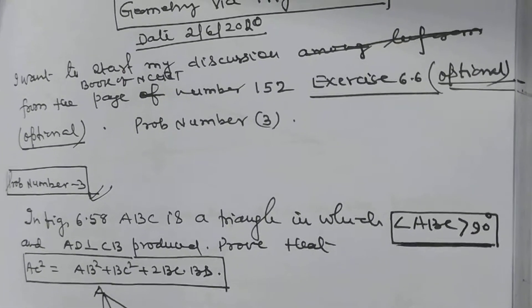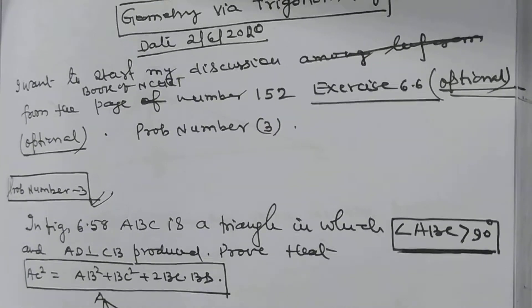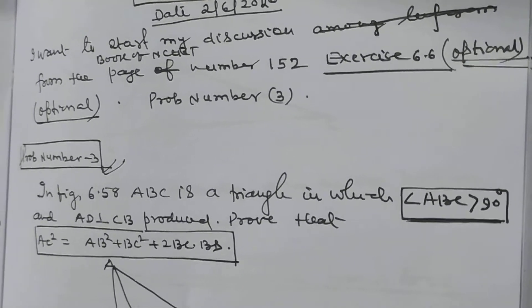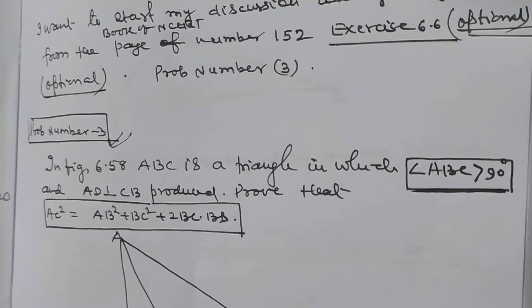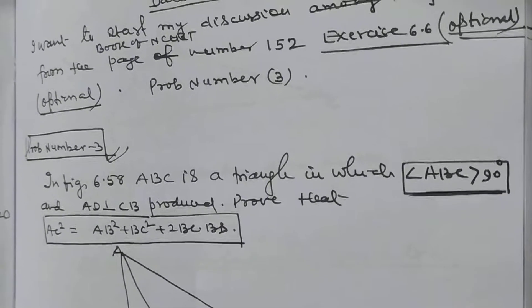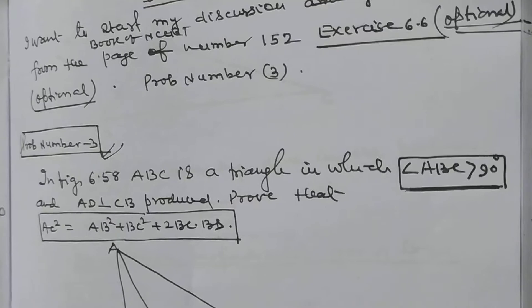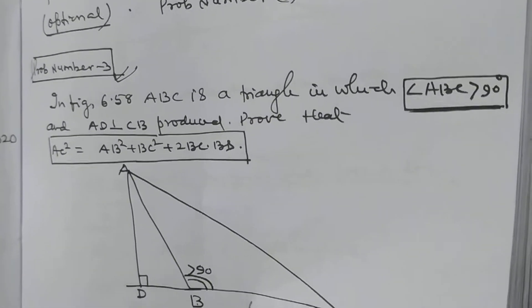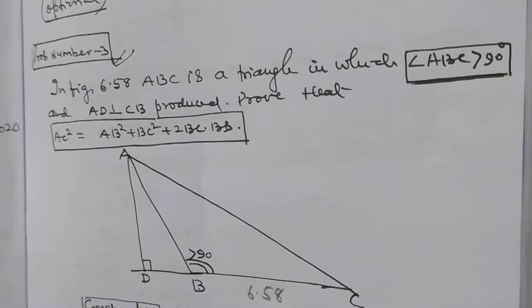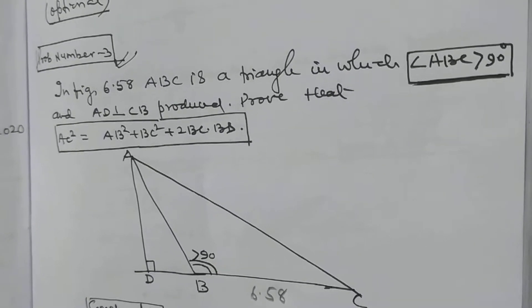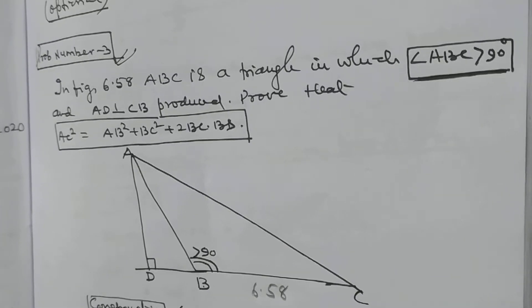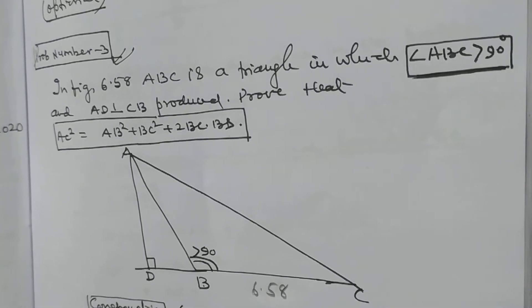Now I want to discuss problem number 3, which is in exercise 6.6. In figure 6.58, this is a problem of NCERT. ABC is a triangle in which angle ABC is greater than 90 degrees, and AD is perpendicular to CB produced. Prove that AC² = AB² + BC² + 2·BC·BD.